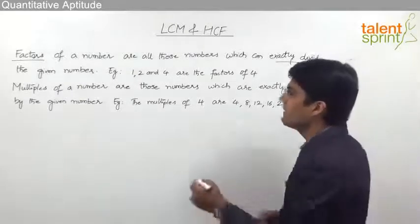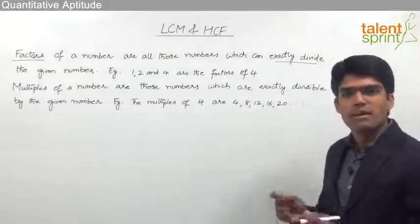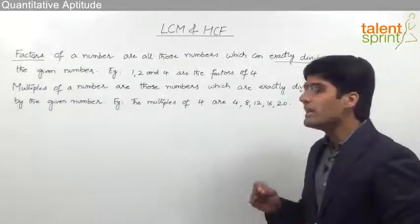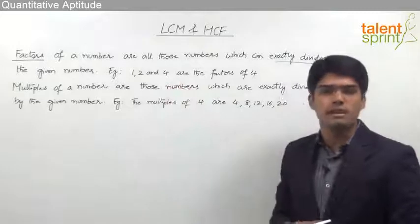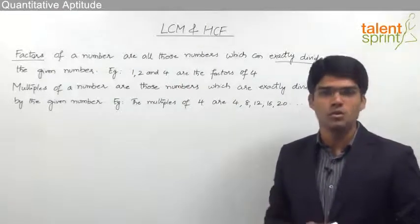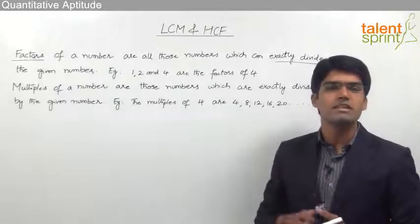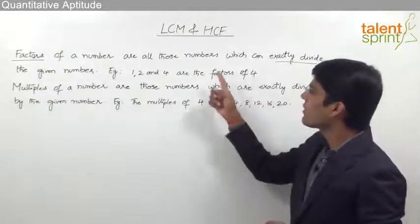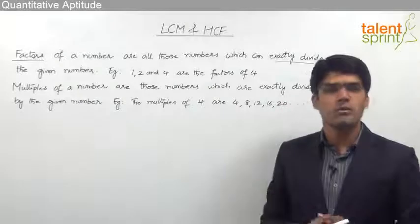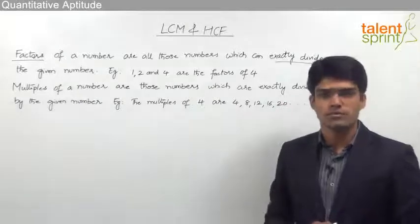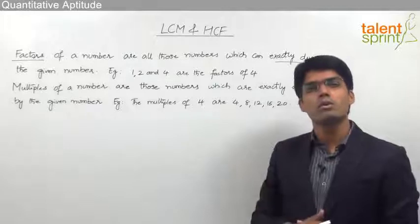For example, 1, 2 and 4 are the factors of 4. If you look at the number 4, it is exactly divisible by 1 — 4 by 1 equals 4, remainder is 0. Similarly, 4 is exactly divisible by 2 — 4 by 2 equals 2.